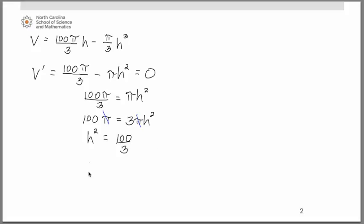which leads to h = 10/√3. If you prefer a decimal approximation for that, that's perfectly fine. Either one is okay. It would be approximately 5.774. This therefore is our critical number.